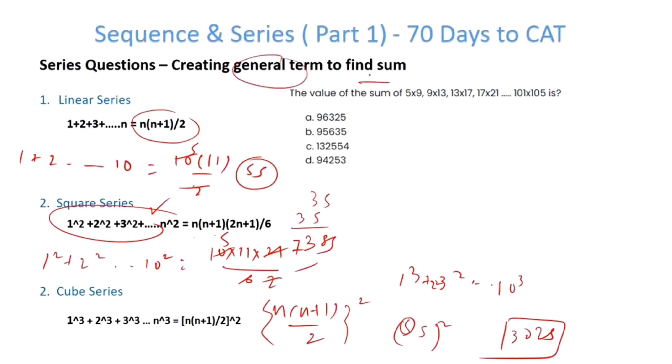Let's take a simple example: 5×9 + 9×13 + 13×17 + ... + 101×205. The key to finding answers to series questions is creating general terms.